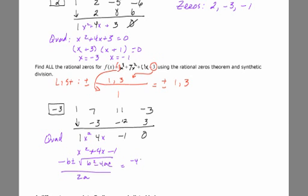Negative 4 plus or minus the square root of 16 minus 4 times 1 times negative 1, all over 2 times 1. Negative 4 plus or minus the square root of 16 plus 4, which will be 20, and that radical reduces.